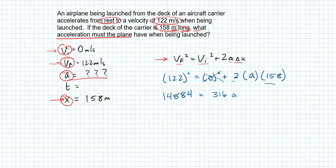So in order to solve for the acceleration, we're going to divide both sides by 316, so the 316 goes away, and that tells us that the acceleration is 47.1 meters per second squared, and that's going to be our acceleration there.